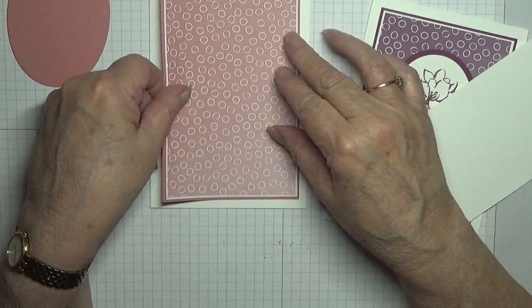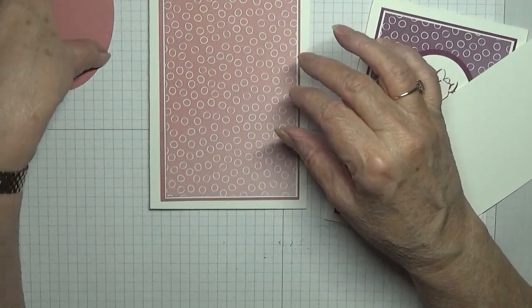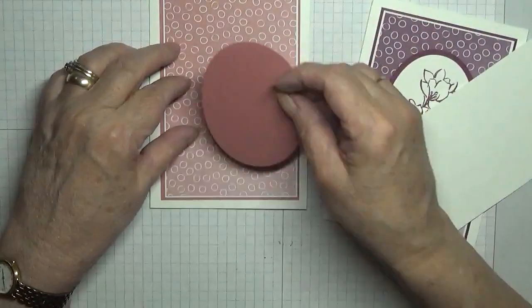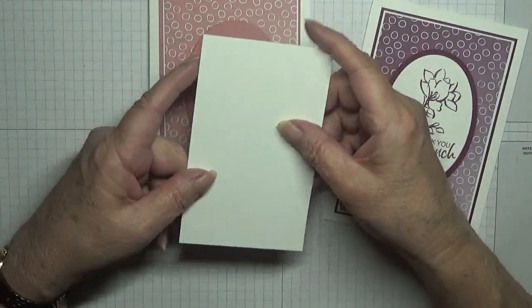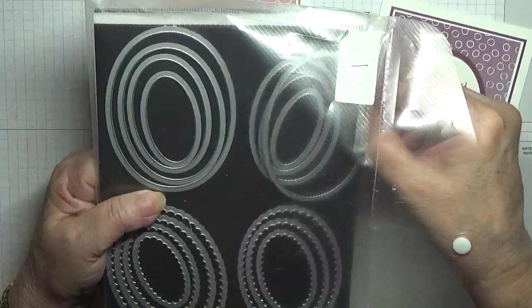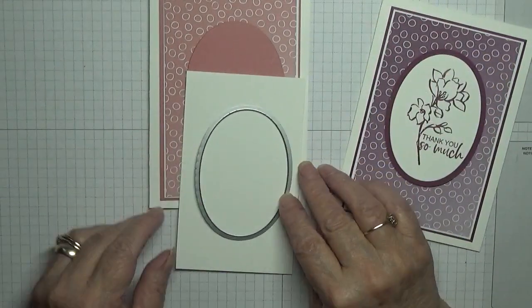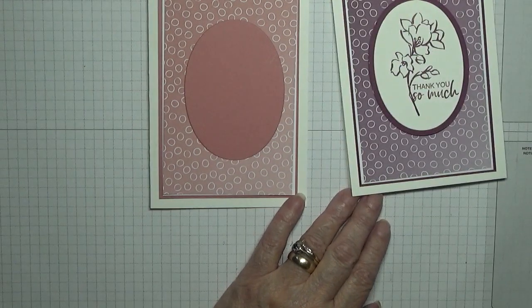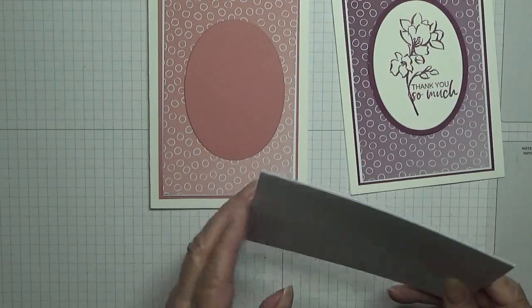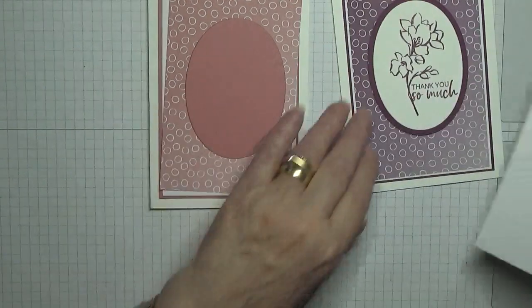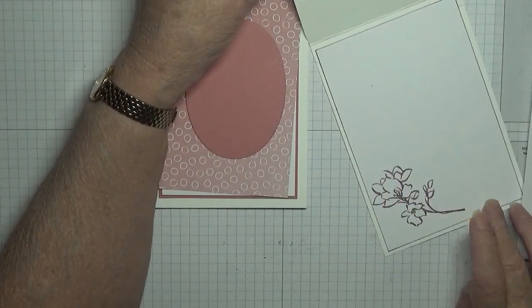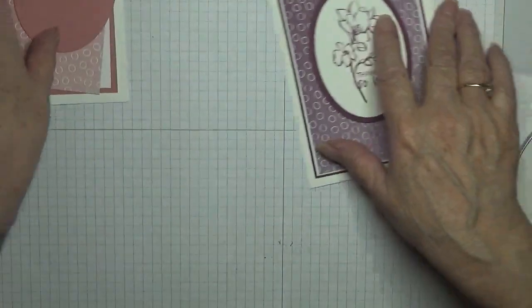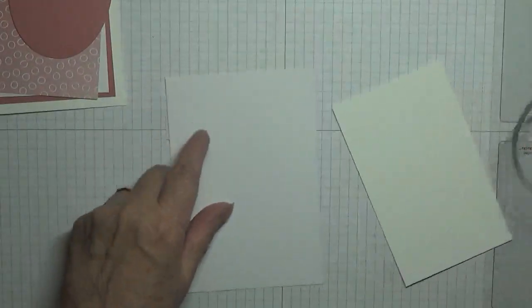I have my largest oval die here in Rococo Rose, and once we've done our stamping we will cut out the second largest oval die. This is such a quick easy card. Inside I got a piece of white card at five and five-eighths by three and seven-eighths, and all I did was a flower on the inside. So we need that and that stamp on.